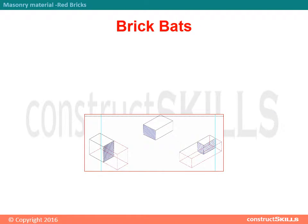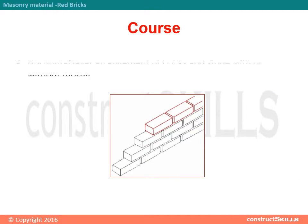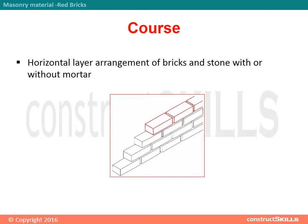King closer: a triangular portion cut to fit in a corner portion of a wall to make a proper joint. Brick bats: if cut into three quarters, it is called a three-quarter bat; cut lengthwise into two halves is called a queen closer; and cut again into two halves is known as a one-quarter brick. Course: a horizontal layer arrangement of bricks and stone, with or without mortar.